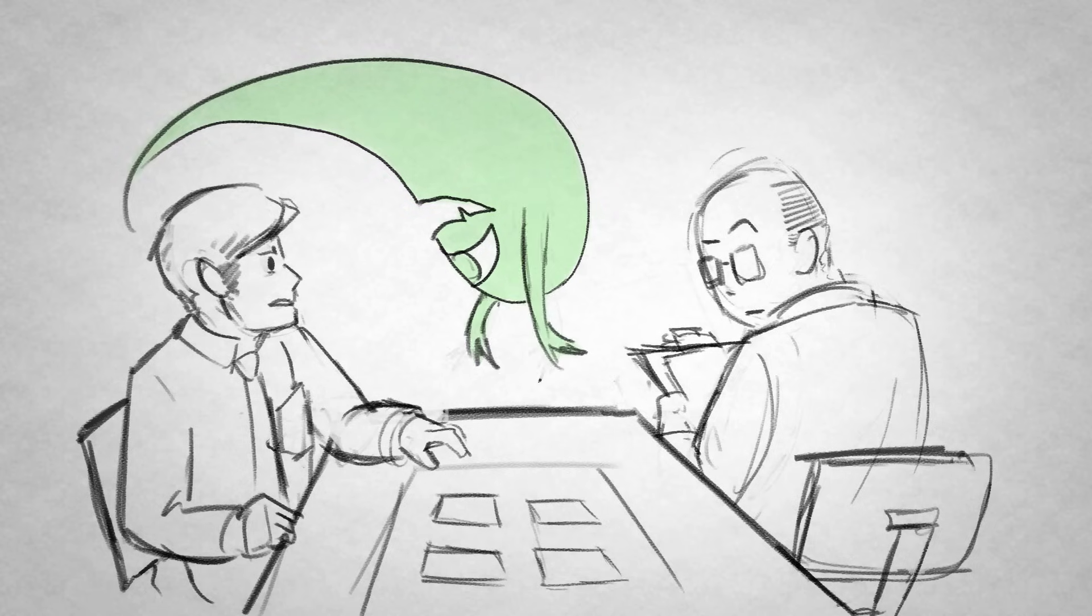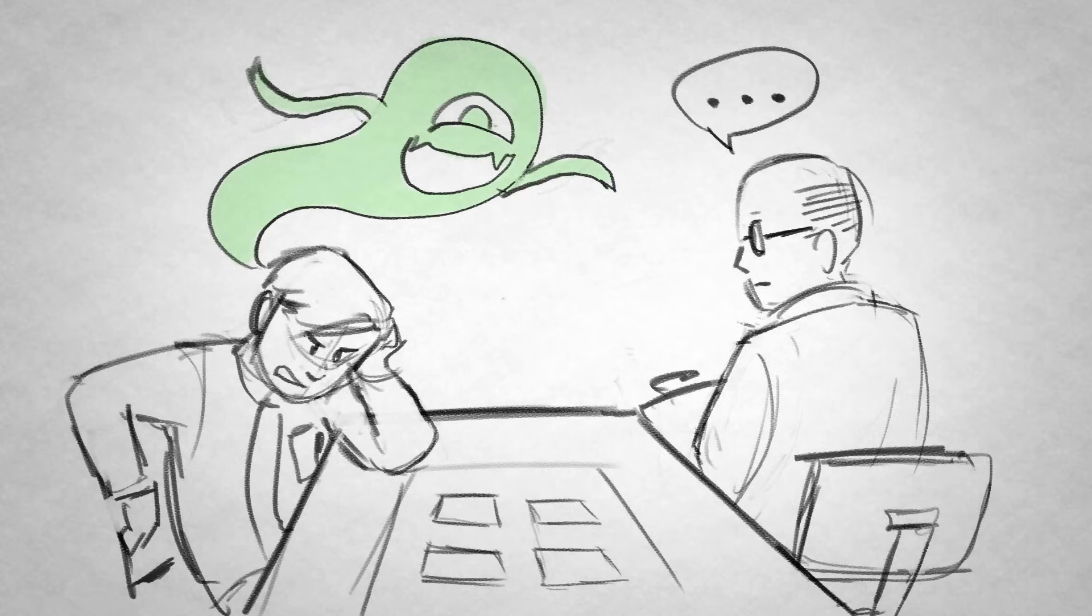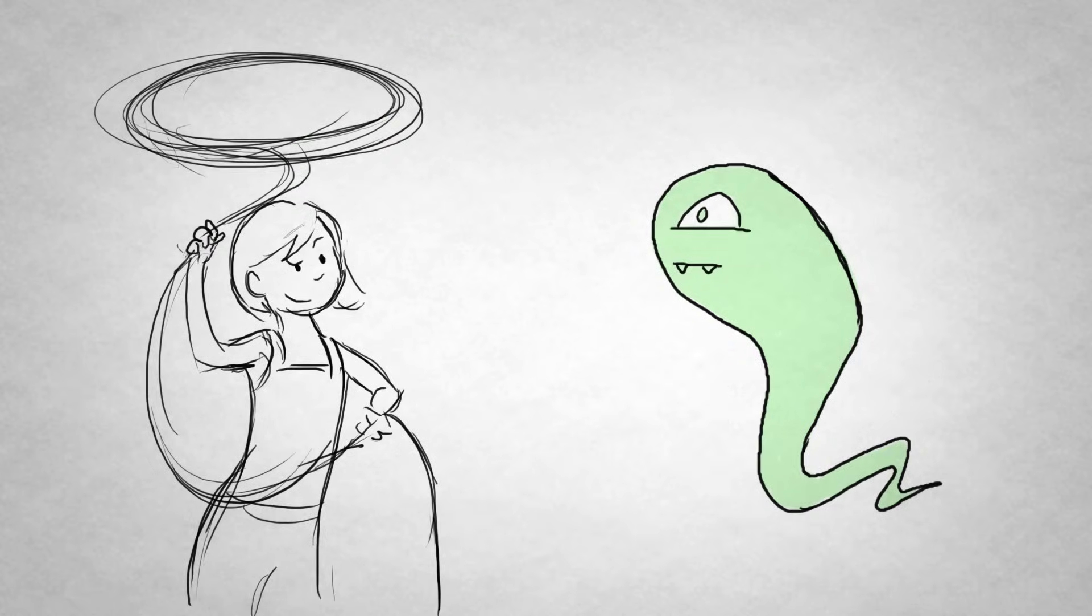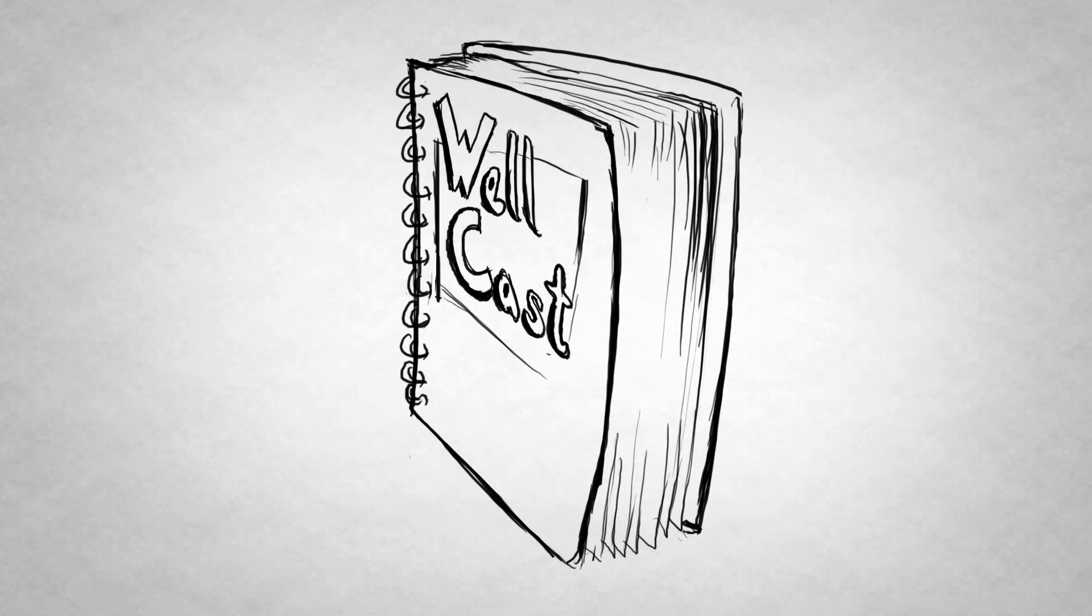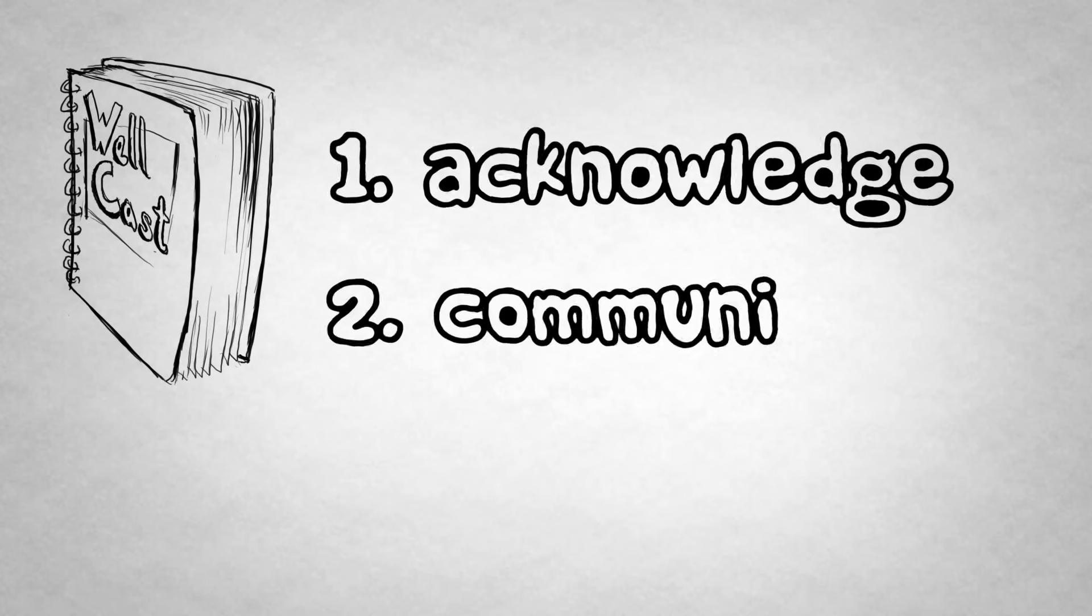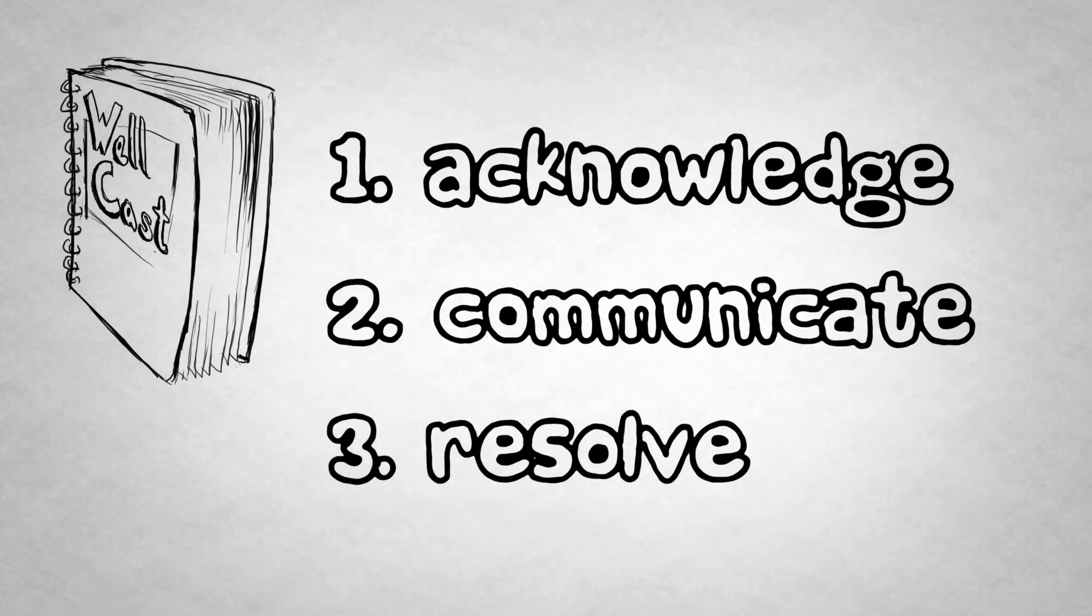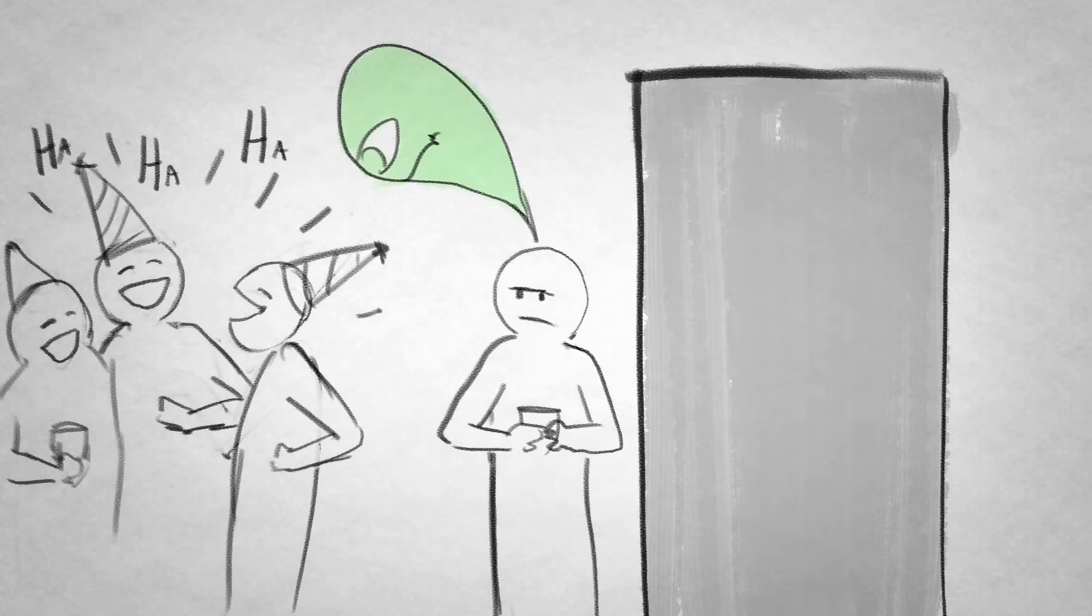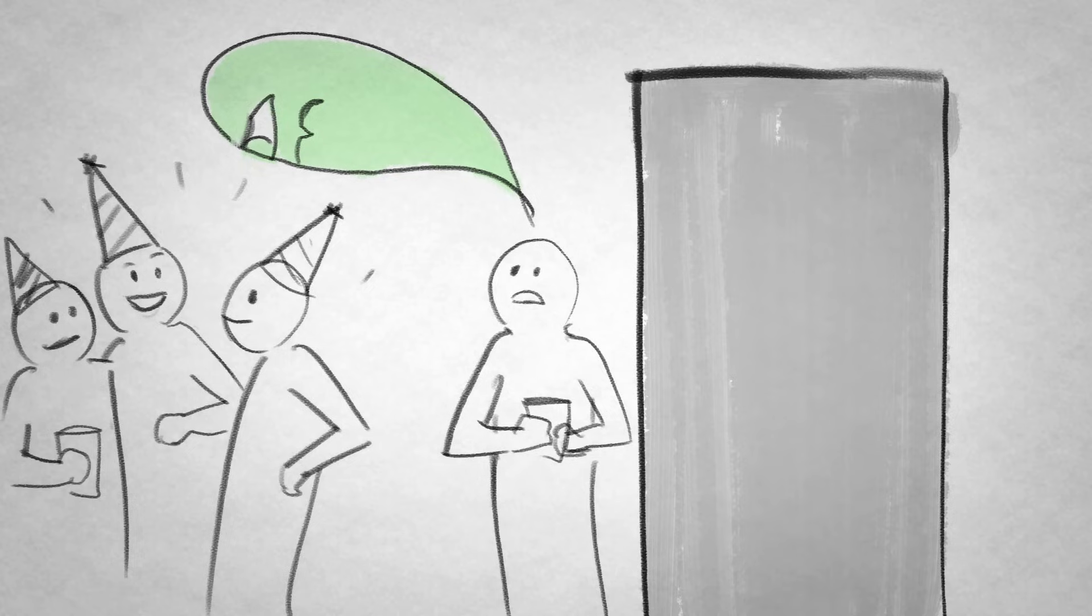So let's try to figure out how to get your jealousy issues under control. Take out your Wellcast journal. We've got a three-step system for this and it's simple: acknowledge, communicate, and resolve. So the next time you're in a situation where you're experiencing those extreme jealous thoughts, go into a separate room, take out your Wellcast journal, and calm down.